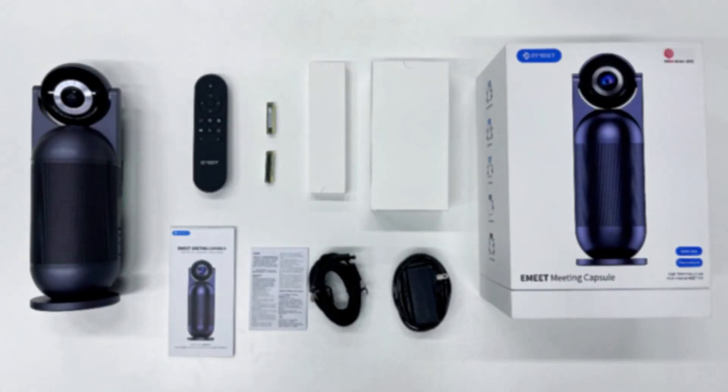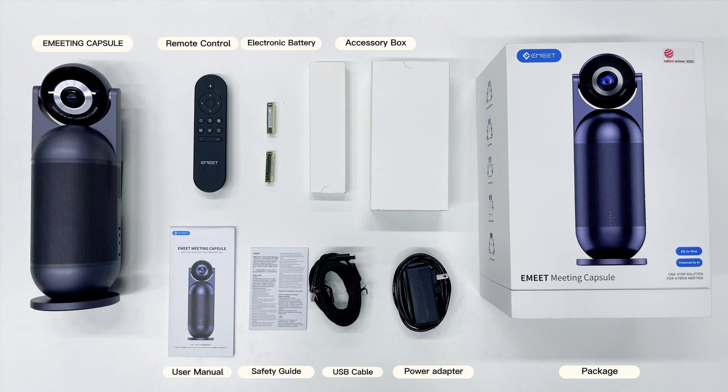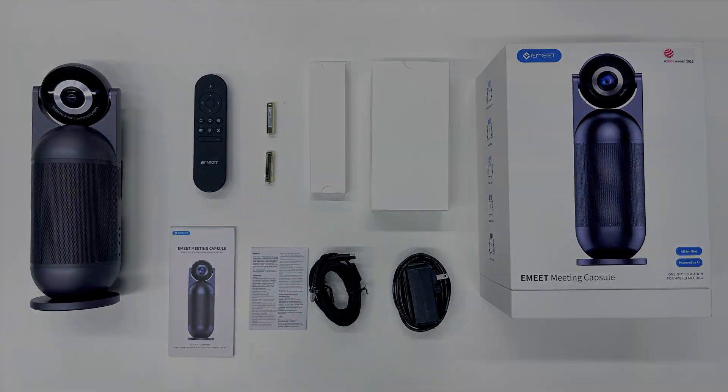Let's see what's in the box. It includes an eMeet Meeting Capsule, a remote control, a 2-meter USB cable, a power adapter, and so on.